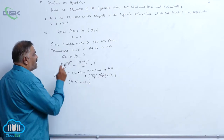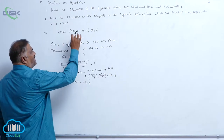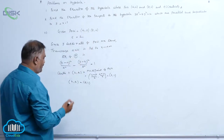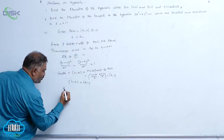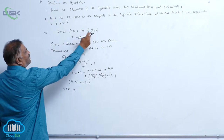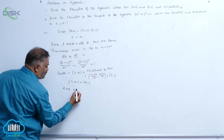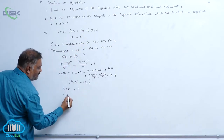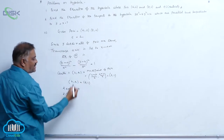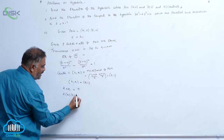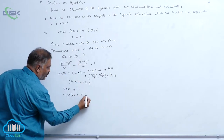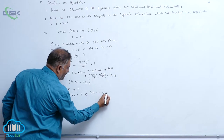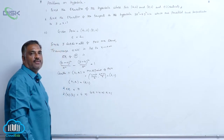Now, one more point: the distance between the foci is 2ae. So 2ae = 8 minus 4 = 4. With e = 2, we get 2 × 2 × a = 4, that is 4a = 4, which implies a = 1.